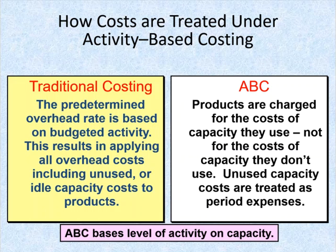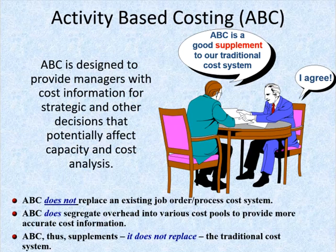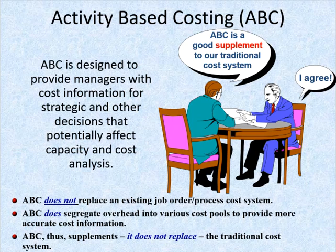So ABC is a costing method designed to provide managers with cost information for strategic and other decisions that potentially affect capacity, and therefore fixed as well as variable cost. It's ordinarily used as a supplement to rather than a replacement for a company's usual costing system.